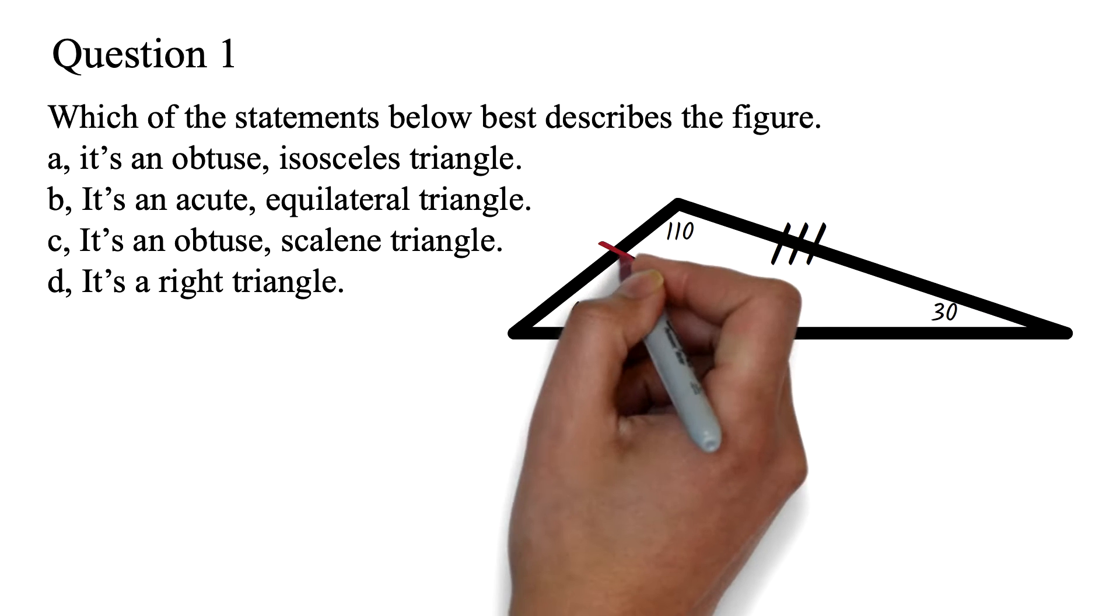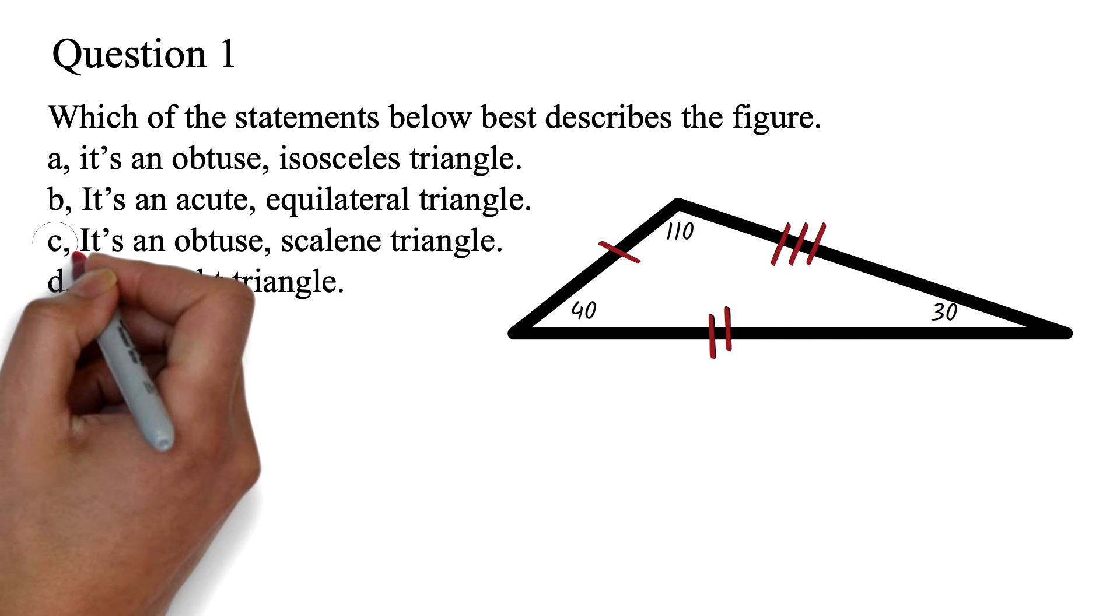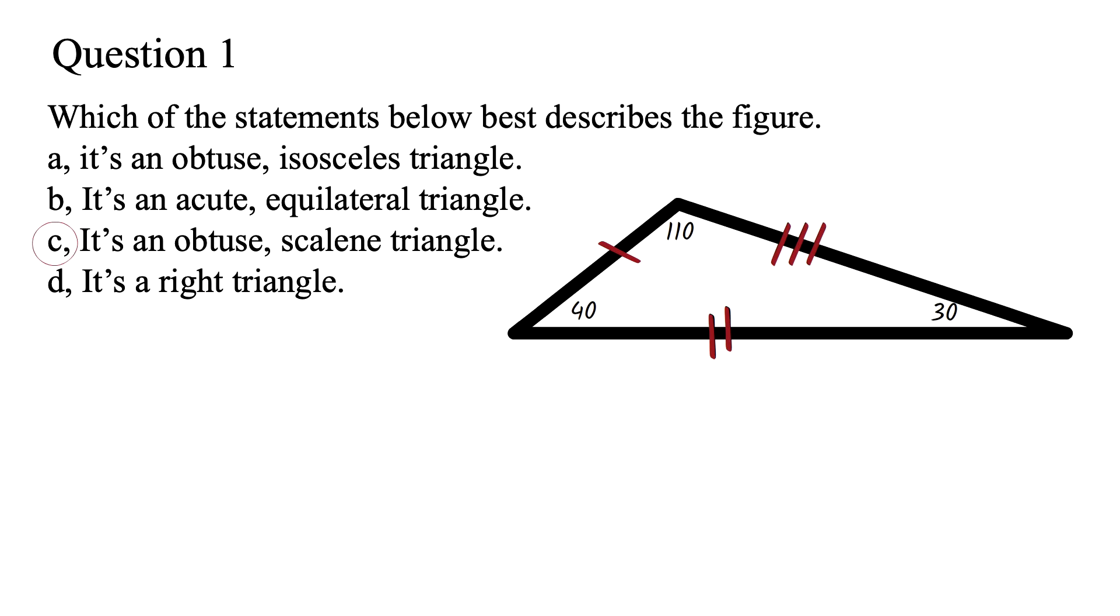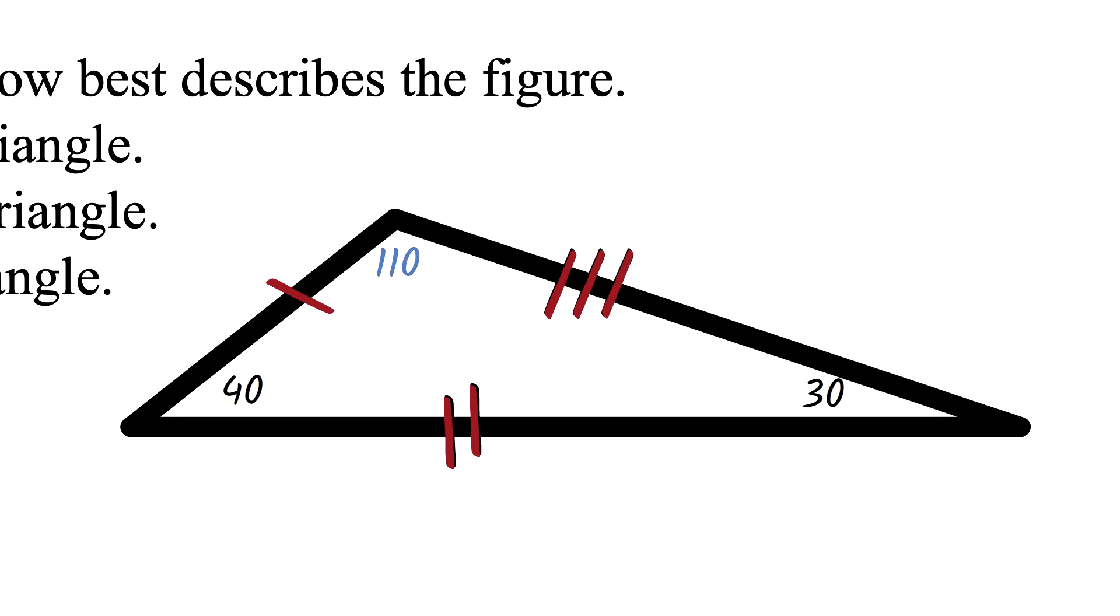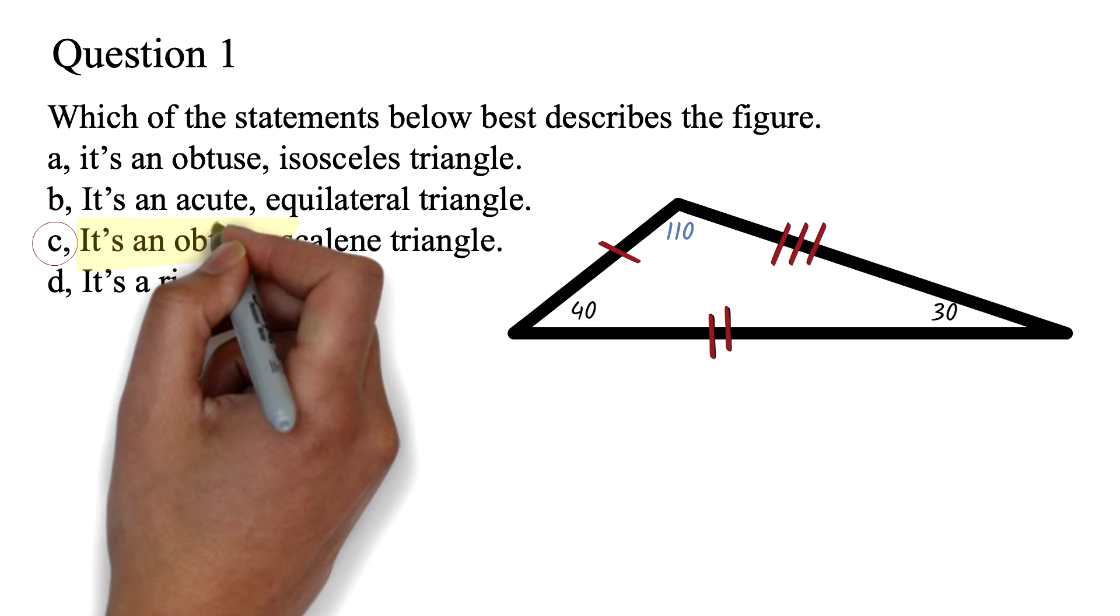First we see that different marks are used for each of the sides, signifying that the sides are not equal. So this is a scalene triangle. With this, we can see that the answer is option C already. We can also tell it's an obtuse triangle, because one of the angles is more than 90 degrees. So it's an obtuse, scalene triangle.